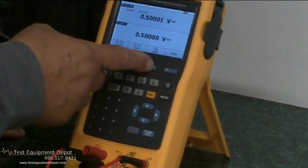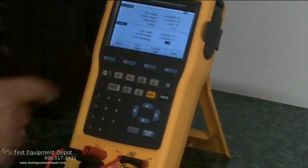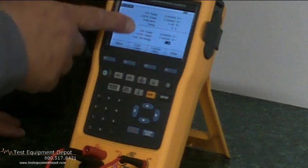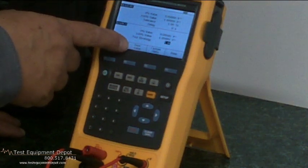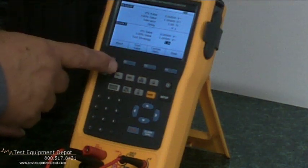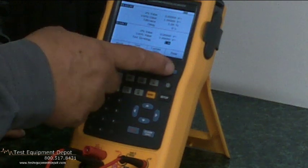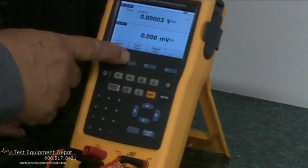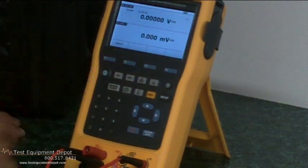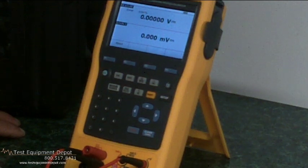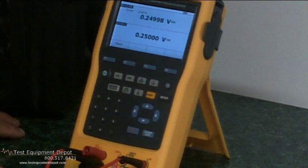After that, we want to do an as-left calibration. We hit the as-left button. It asks us if we want to use the same procedure, including the same test strategy. Until we're done, we're going to go over to autotest and follow the same path.